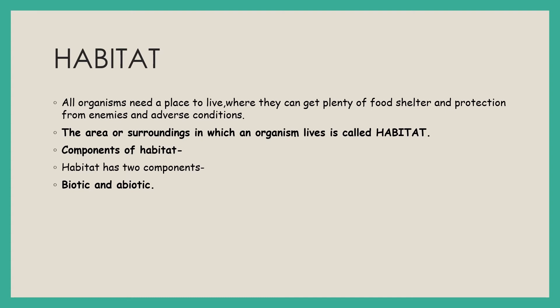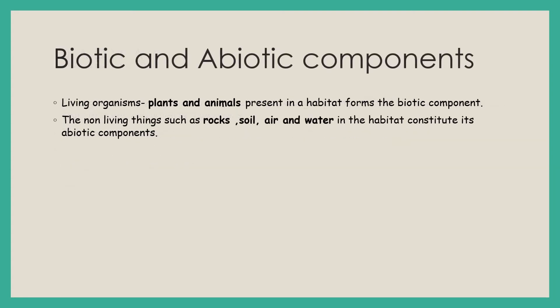Habitat has two components: one is living and another is non-living. The living components are called biotic components and the non-living components are called abiotic components. All living organisms require both components in order to survive. Biotic components are those obtained from living organisms — plants and animals — and the main thing we obtain from them is food.